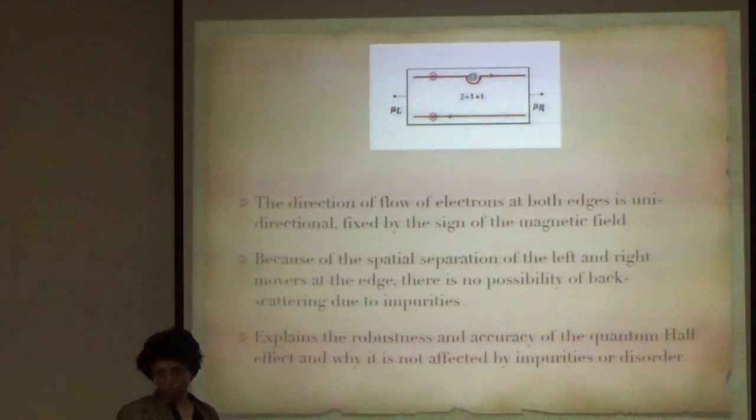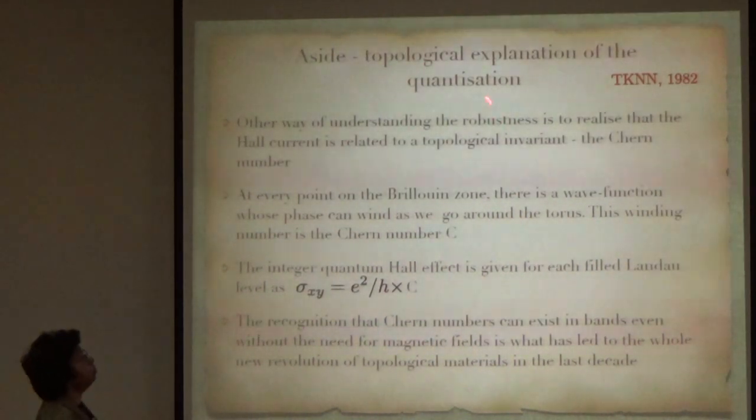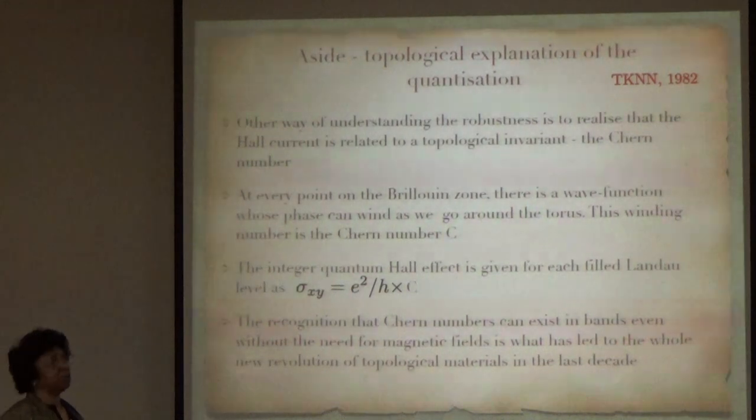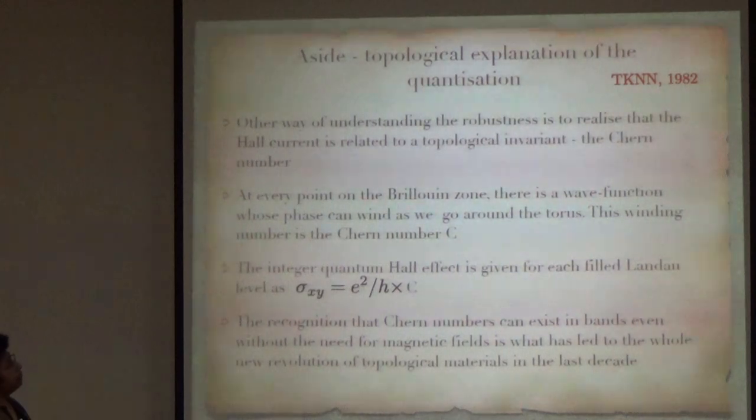As many of you probably know, there is also a topological explanation for the quantization of the conductance. The Hall current is actually related to something called a topological invariant, which is called the Chern number. The idea is that at every point on the Brillouin zone, there is a wave function, and the phase of this wave function can wind as you go around the Brillouin zone or the torus.